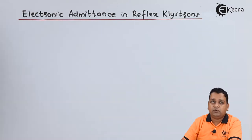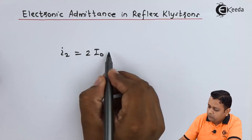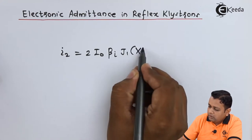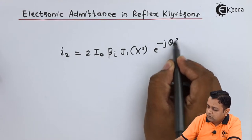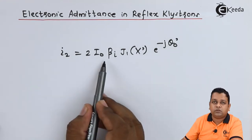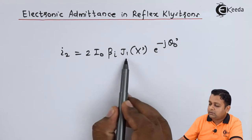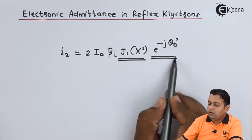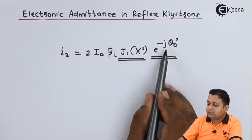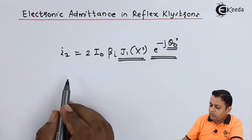First of all, we shall mention the induced current into the cavity in phasor form. It is given by the equation: i2 = 2 * I0 * βi * J1(X') * e^(−jθ0'). Here I0 is the beam current due to the DC potential applied, βi is the beam coupling coefficient with respect to the cavity, J1(X') is the Bessel function of first order with respect to the bunching parameter X', and e^(−jθ0') is the phasor term where θ0' is the DC transit angle introduced in the previous videos.